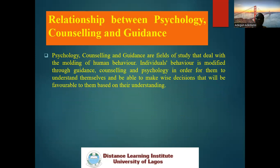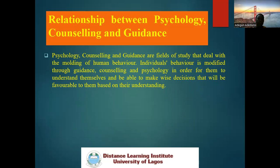What is the relationship between psychology, counseling, and guidance? Why are they interrelated? Basically, the three fields talk about the moulding of human behavior. Psychology tells us it is the study of human behavior. When we study behaviors in psychology, we then look at the aspects of counseling and guidance. All of this has to do with the moulding of human behaviors. For us to have well-adjusted individuals, these three work hand in hand. Psychology helps the counselor to identify the problem, and guidance is the application of psychological principles in helping the person manage the issue or come out of it.